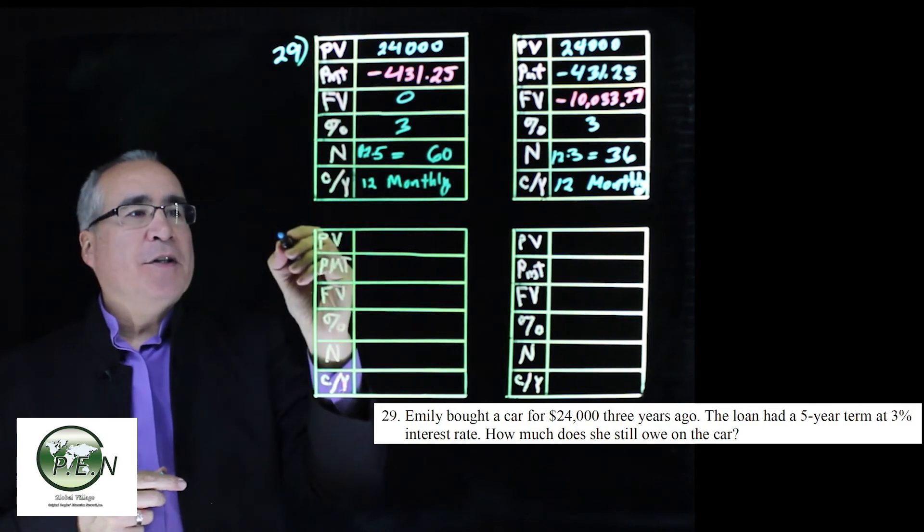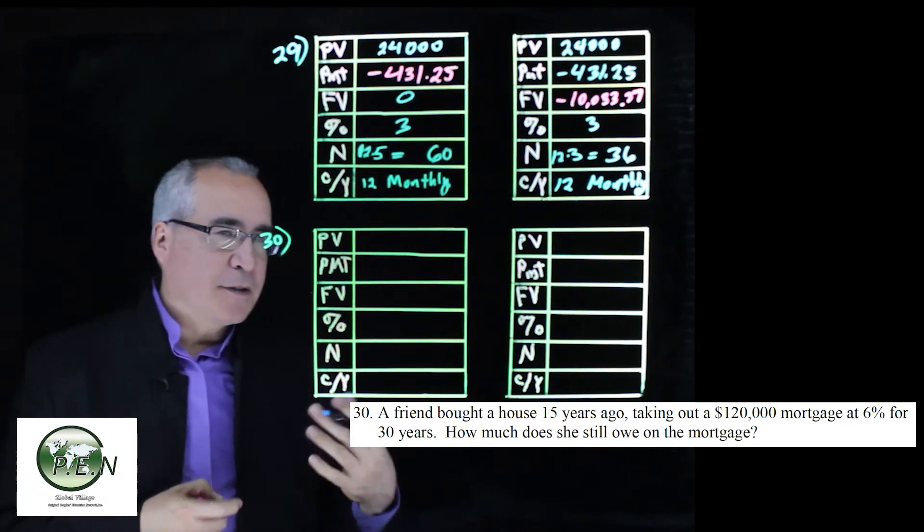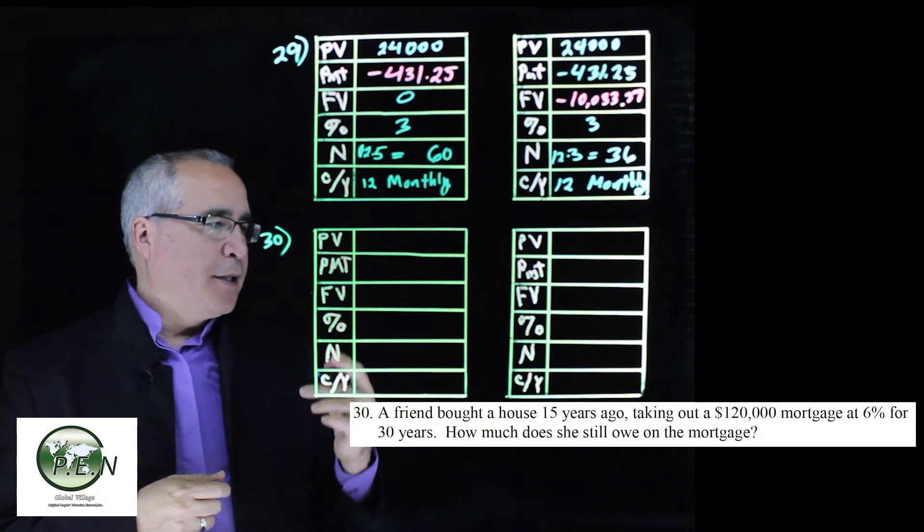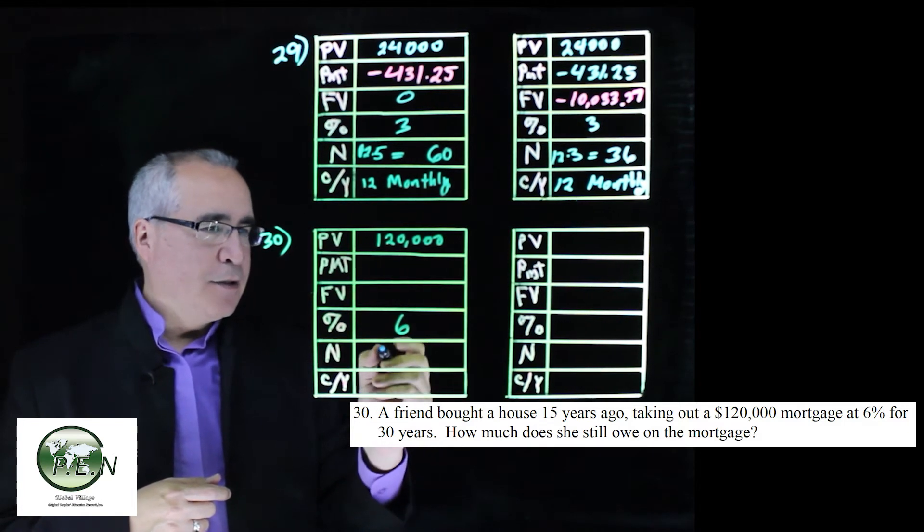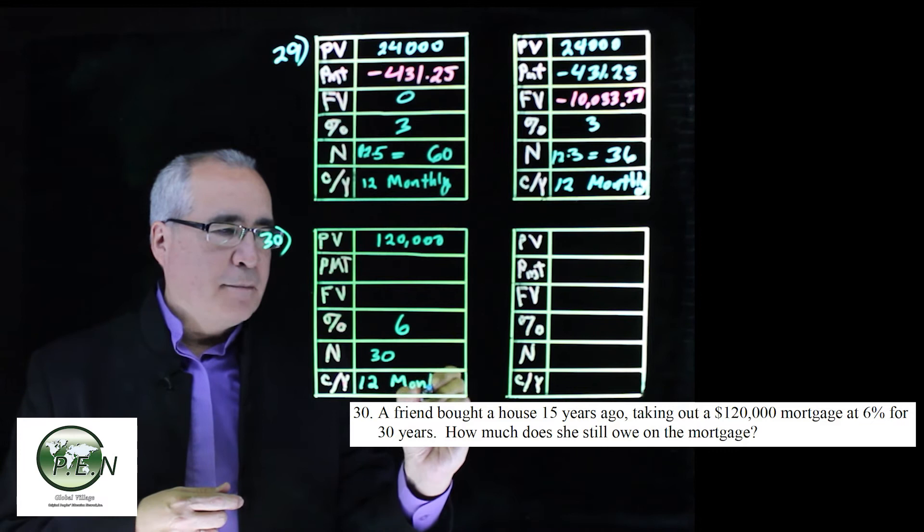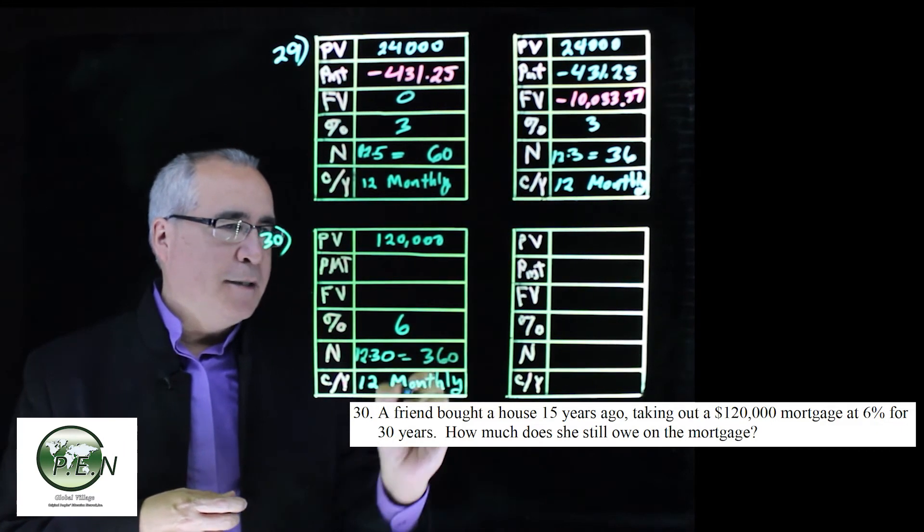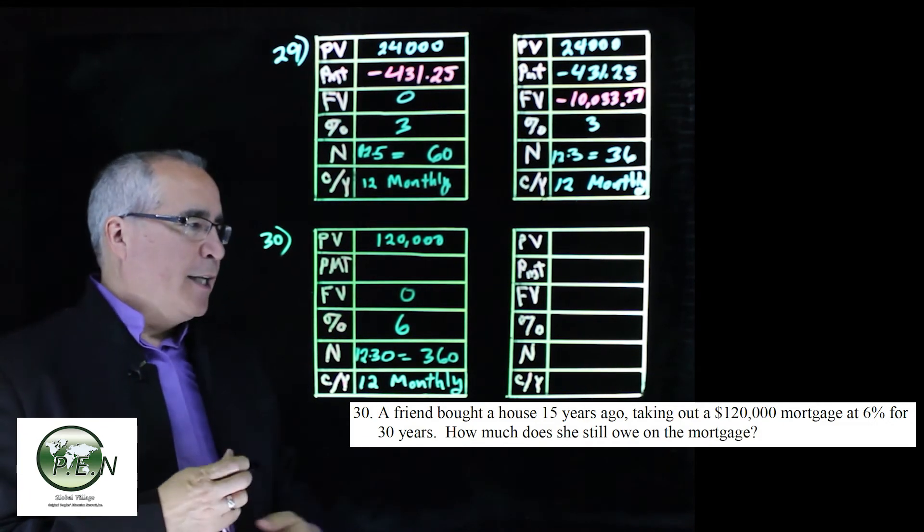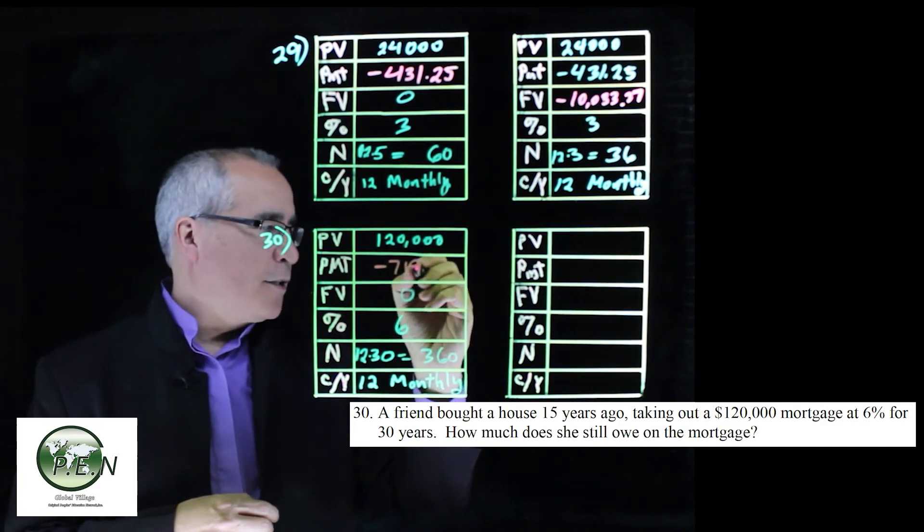If it works for cars, it certainly works for mortgages as well. So we can help out our friend here, who we find out they bought a house 15 years ago with a 30-year loan. So they're halfway through their loan. We're going to do this calculation to help them find out how much they owe right now. So they took out a loan for $120,000. It's got a 6% interest rate. It was initially a 30-year loan. It's going to be a monthly payment. 12 times 30 is 360. It would have been projected to have a future value of zero at the end of 30 years. So then when we click on the payment key, we find out that the payment to make all this happen is $719.46.